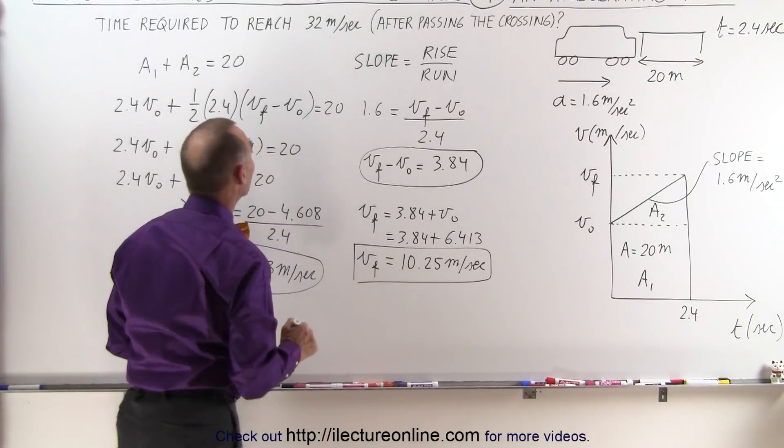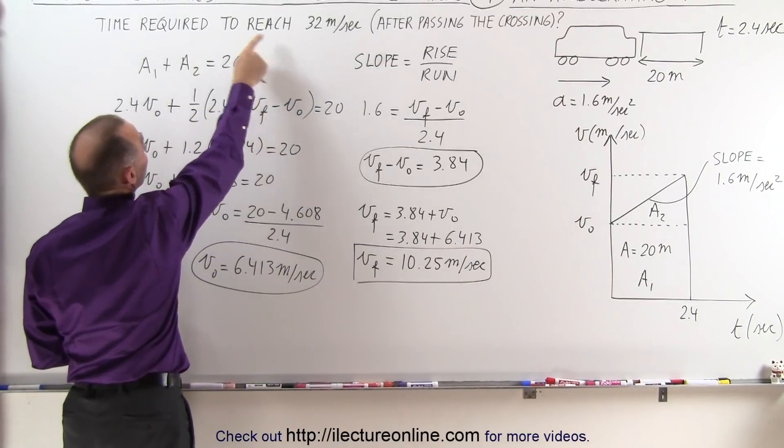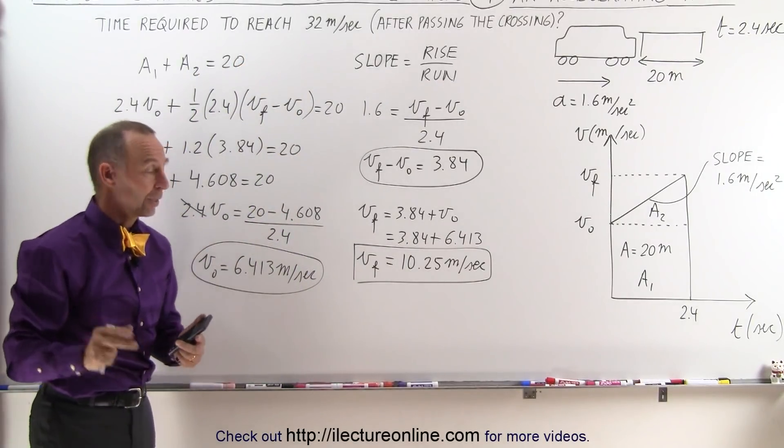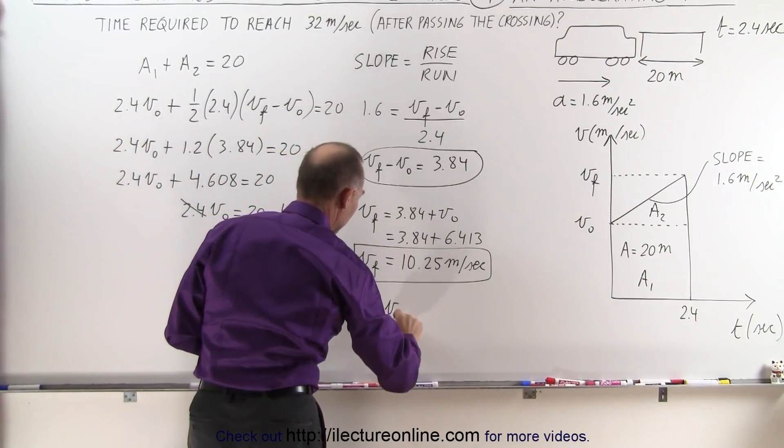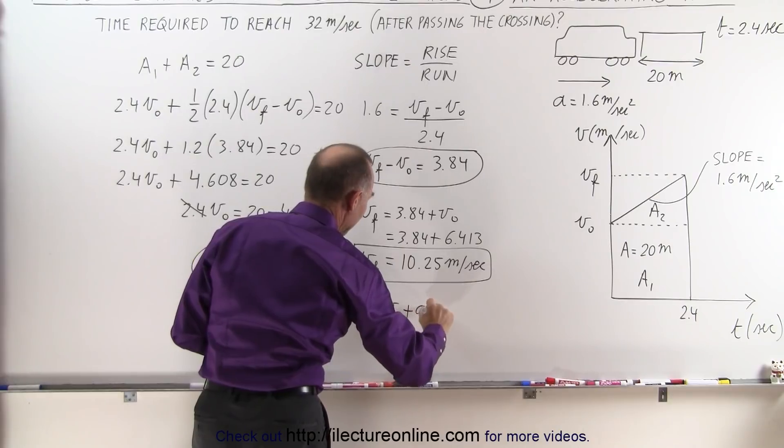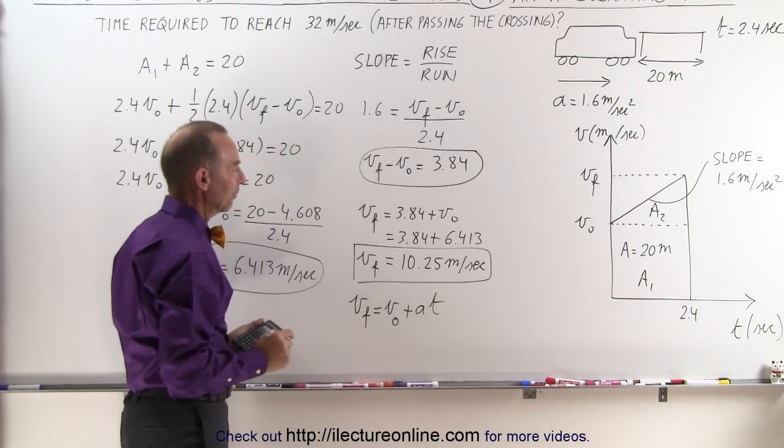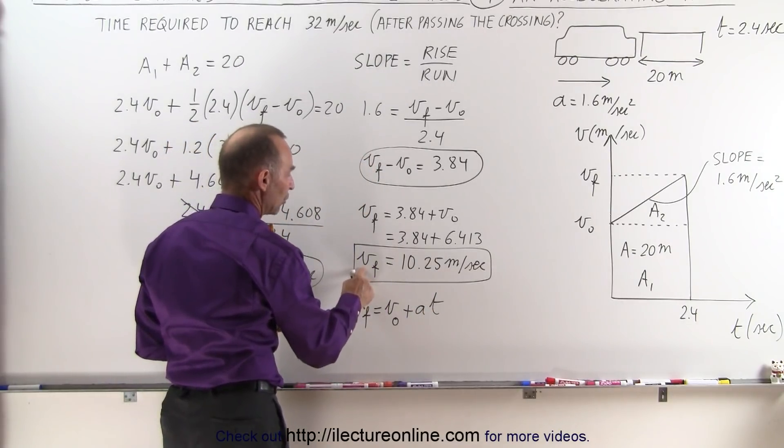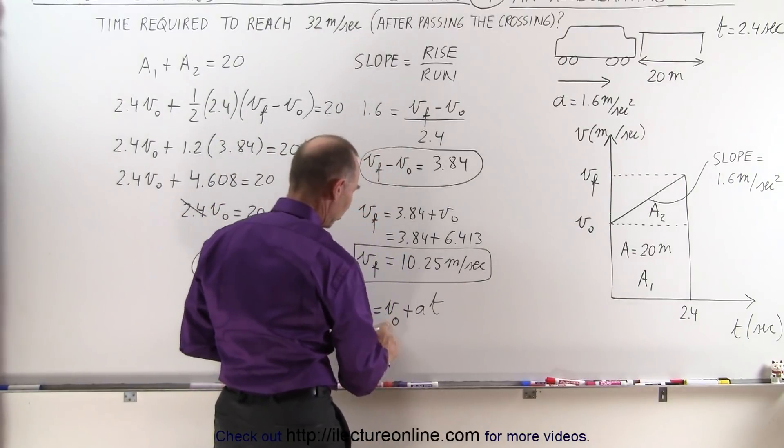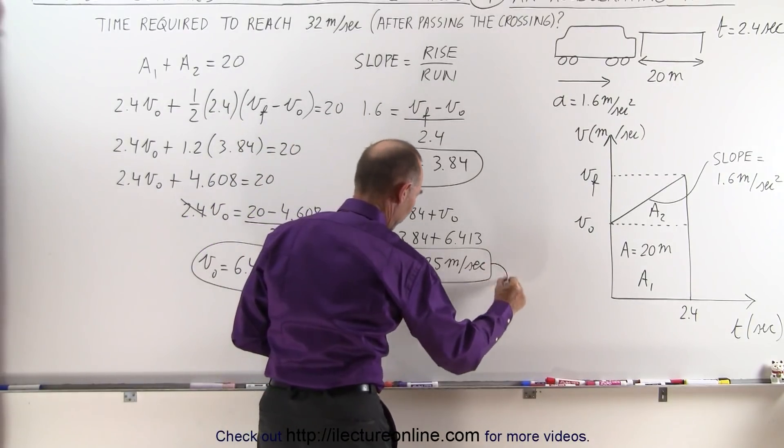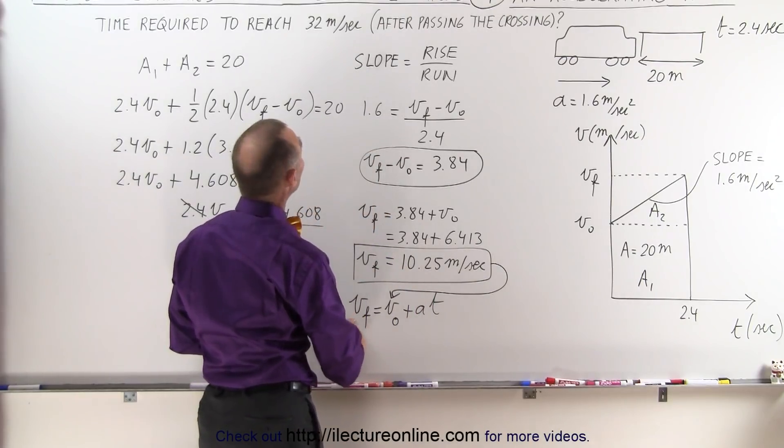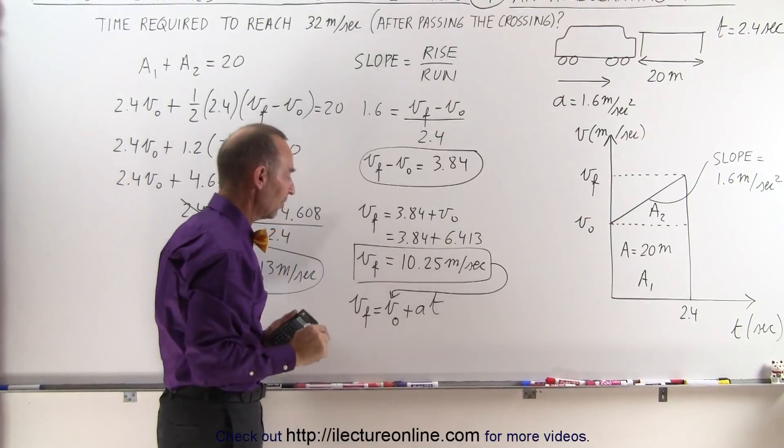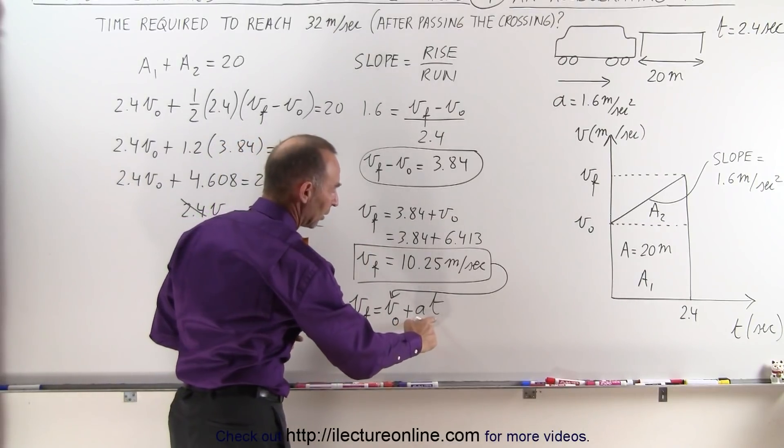And then finally, we want to know how long it's going to take to reach 32 meters per second. We can use the equation that v_final equals v_initial plus a times t. And of course, v_final will now be our new v. My v_initial would be my new v_final, so this is going to go in here. And then we find the new v_final, which will be the 32 meters per second. And we need to find out how long it will take.